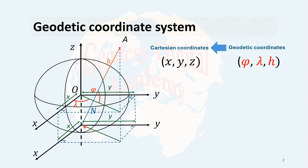If I multiply this projected line by cosine of lambda, I get x. And if I multiply this side by sine of lambda, I get y. So it's very similar to the spherical coordinate case. Instead of N we have r in spherical coordinates, but in the geodetic coordinate system we have N, the radius of prime vertical. However, z is not that simple and must be derived another way.